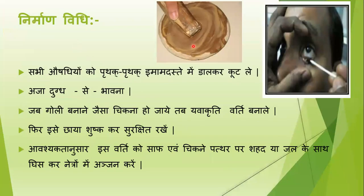Nirman vidhi mein kya hai — jo abhi aapne 8 ingredients dekhe, usko aapne ek imam dhaste mein alag alag daal kar kootna hai, aur ek churn bana lena hai — means kapde se chhan kar aapne churn bana lena hai. Baad mein jo bhawna dravya tha — ajadubd — in sabhi ko ekatr karke, aapne ajadubd ke saath usko bhawna dheni hai. Baad mein jab woh paste form mein ho jata hai, means bhawna dhene ke baad jab woh paste form mein ho jaye ga —